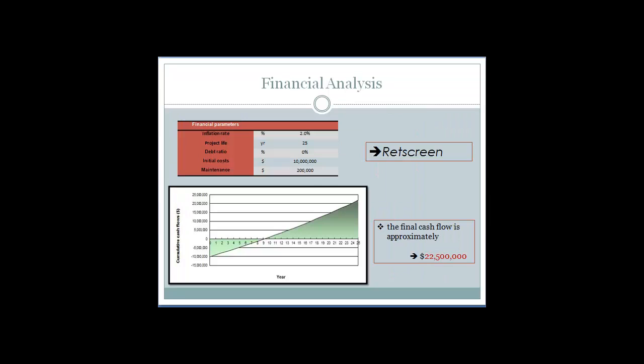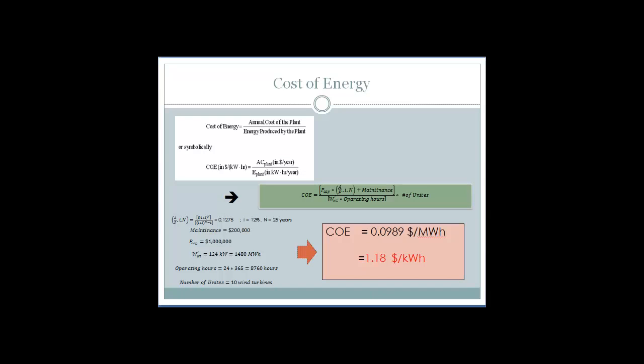Entering some input financial parameters, RETScreen provided the following cash flow projection. The final cost of energy is $1.18 per kilowatt hour.